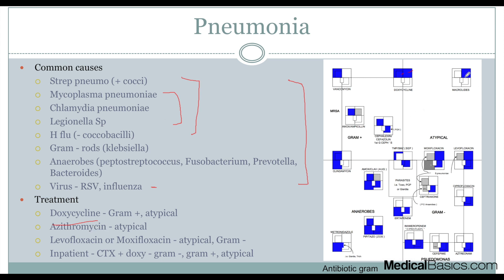Now let's look at levofloxacin and moxifloxacin — why is that a good regimen? They have atypical coverage as well as gram-negative coverage. So once we start worrying about gram-negative organisms, that's when we start thinking about moxifloxacin or levofloxacin. In very severely ill inpatients using ceftriaxone plus doxycycline — why is that the case? Ceftriaxone has very good gram-negative coverage but doesn't have much coverage of the atypicals — actually no coverage of the atypicals. That's why we add doxycycline on top of it — it provides atypical coverage and much better gram-positive as well as MRSA coverage.